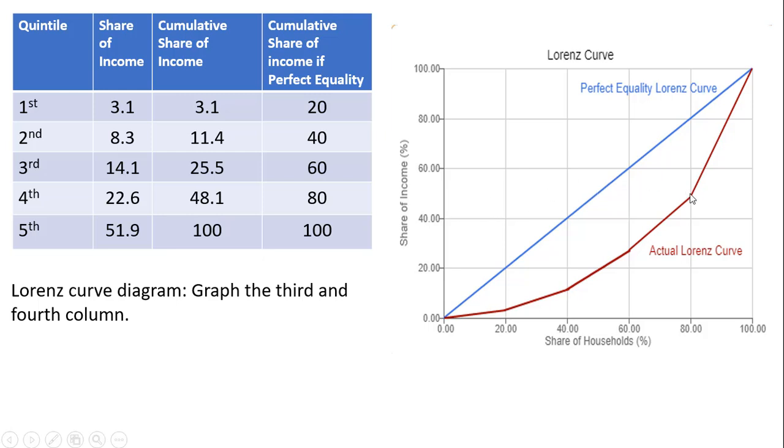The last one's easy. The bottom 100% earned 100% of the income, and that's just going to be this point up here at 100 and 100.